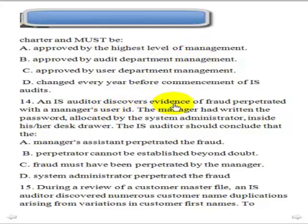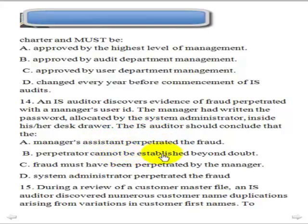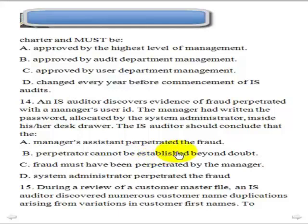Question 14: An IS auditor discovers evidence of fraud perpetrated with a manager's user ID. The manager had written the password allocated by the system administrator — the default password — inside a desk drawer. The IS auditor should conclude that the perpetrator cannot be established beyond doubt, because there is no firm evidence the manager committed the fraud. Since the password was written down, anyone could have seen it. So the best answer is B.